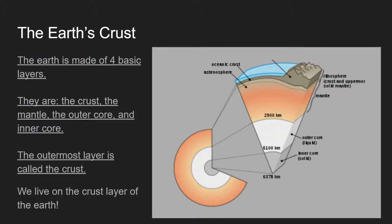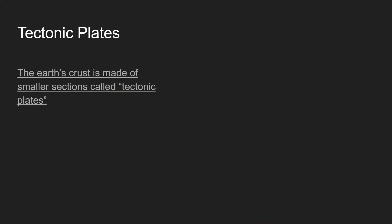The crust is sometimes called the lithosphere; part of it is called the asthenosphere, but we're always going to call it the crust. You and I live on the crust, so we'll keep it simple. We need to look at tectonic plates — the Earth's crust is made of small sections called tectonic plates.